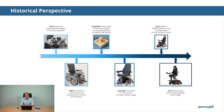In 2017, Permobile came with the M3 and the M5, focusing on improving the driver experience for the user and improving the comfort.